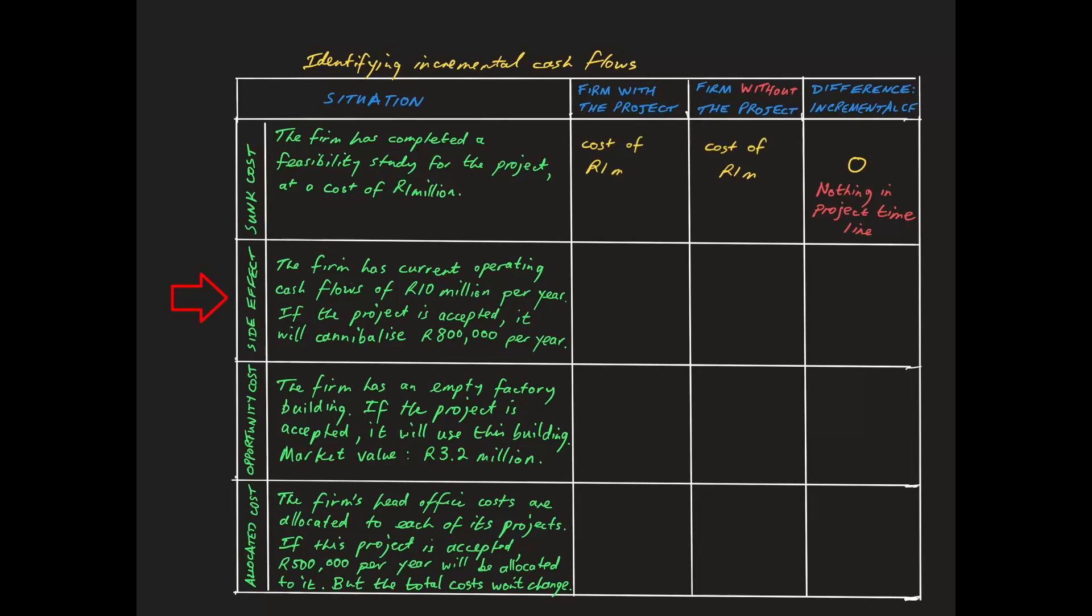For the side effect, we note the supplied information that if the project is accepted, it will reduce the existing operating cash flows of the firm by 800,000, from 10 million to 9.2 million. This kind of thing can happen when a new product line will bring in a new revenue stream for the firm, but will also result in reduced sales for existing older products. Such a strategy makes sense if the benefits of increased sales exceed the costs of the lost revenues.